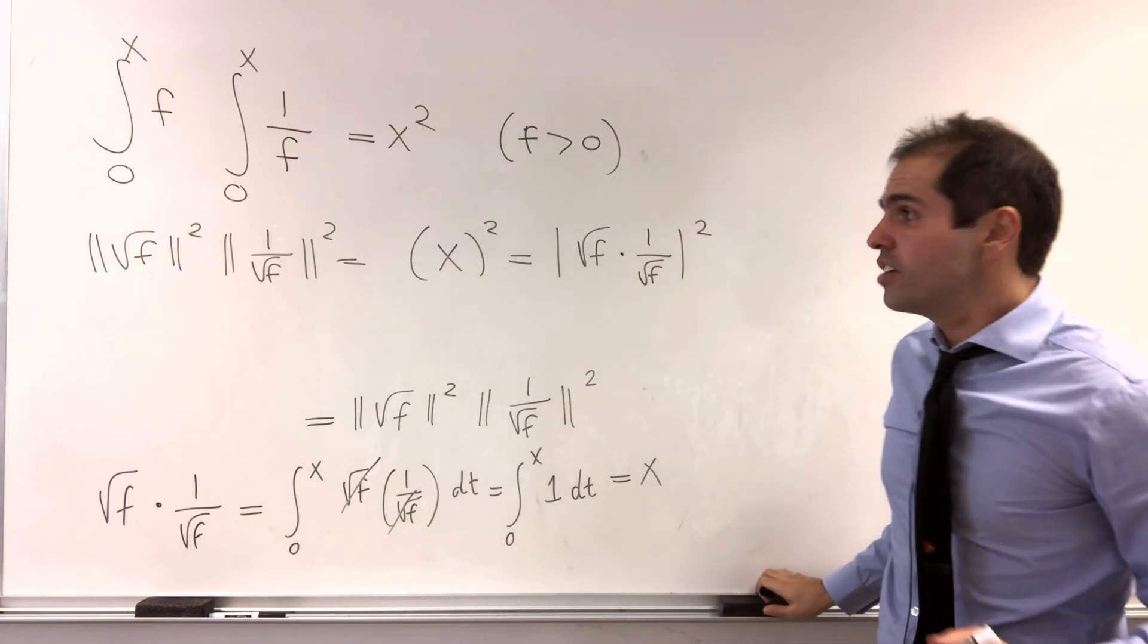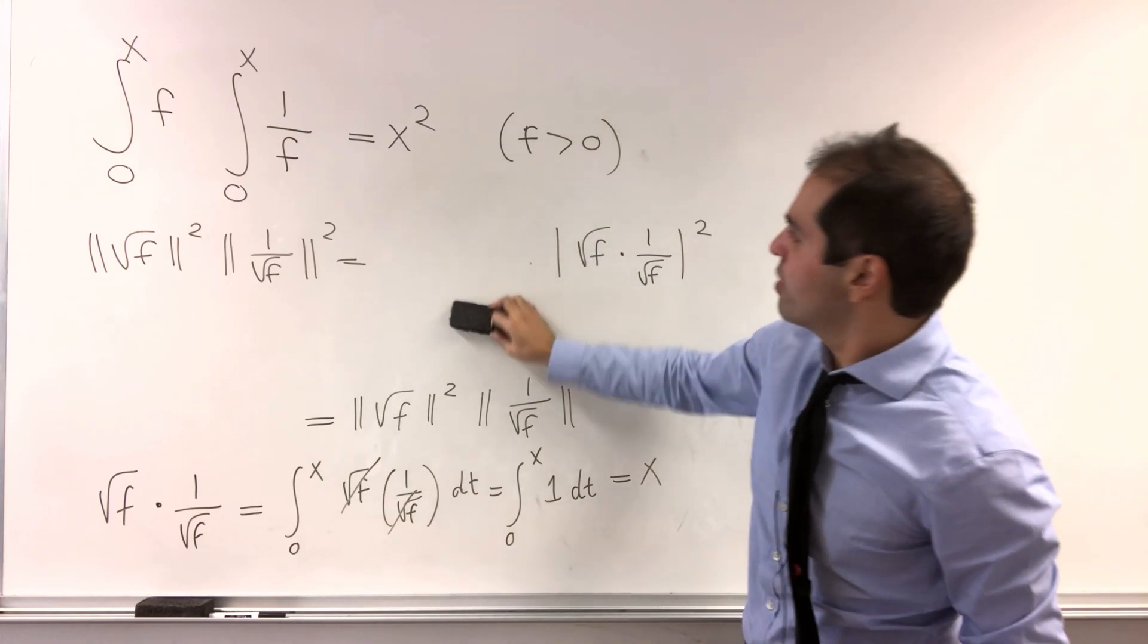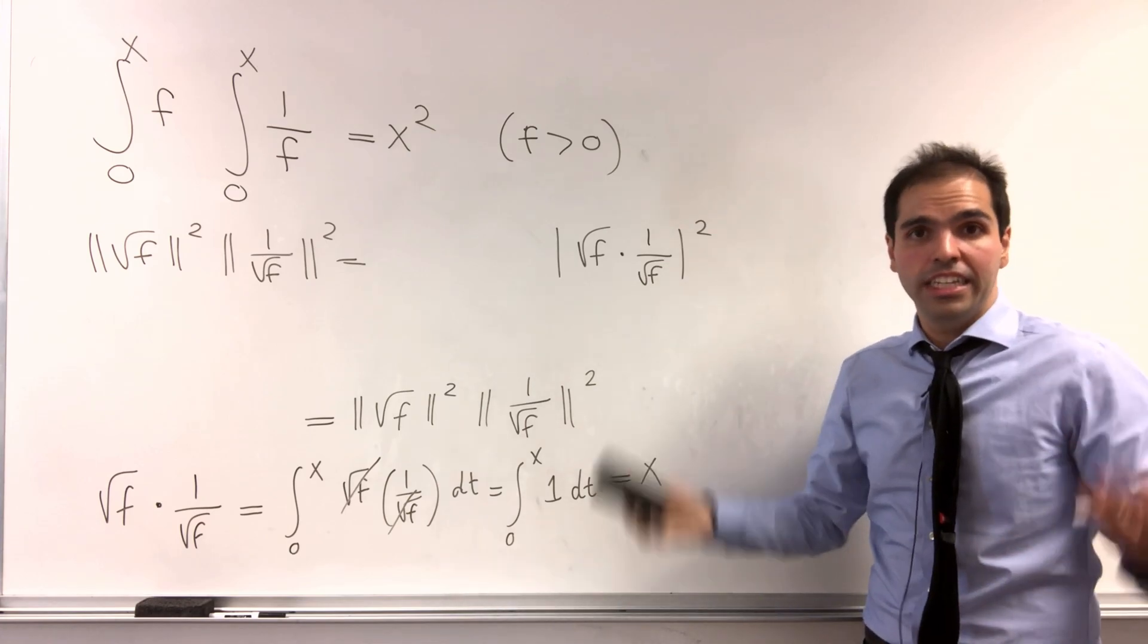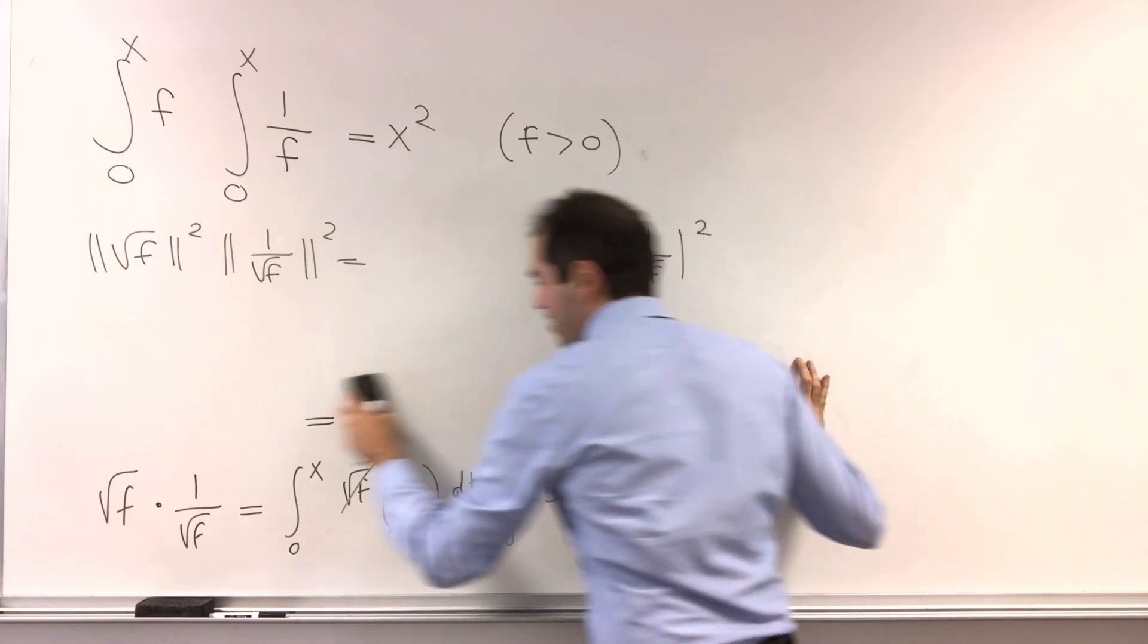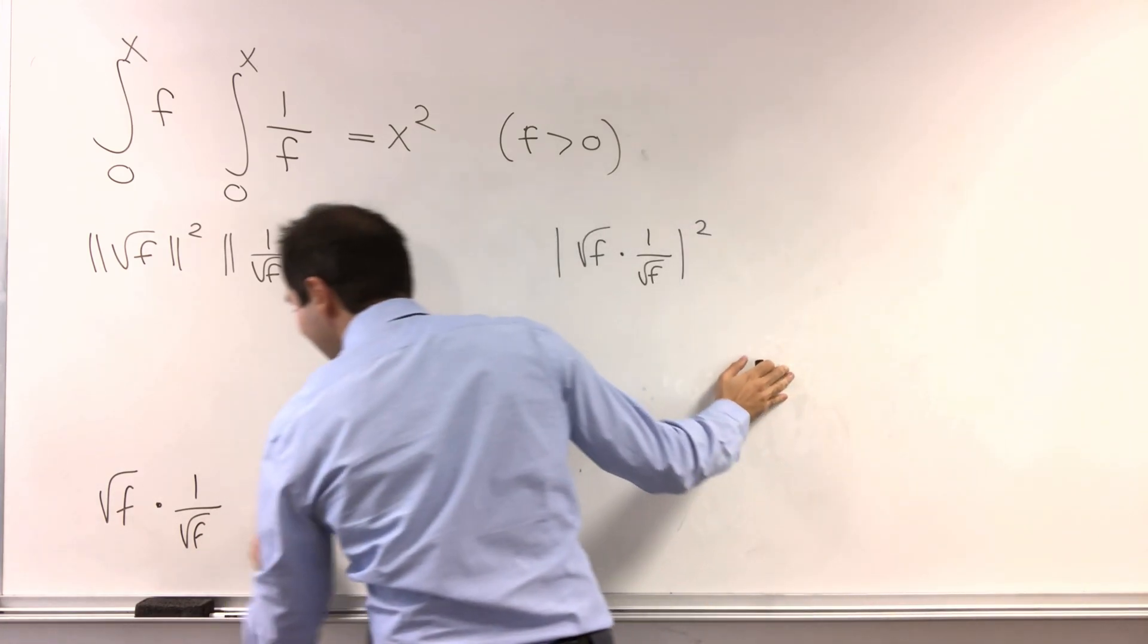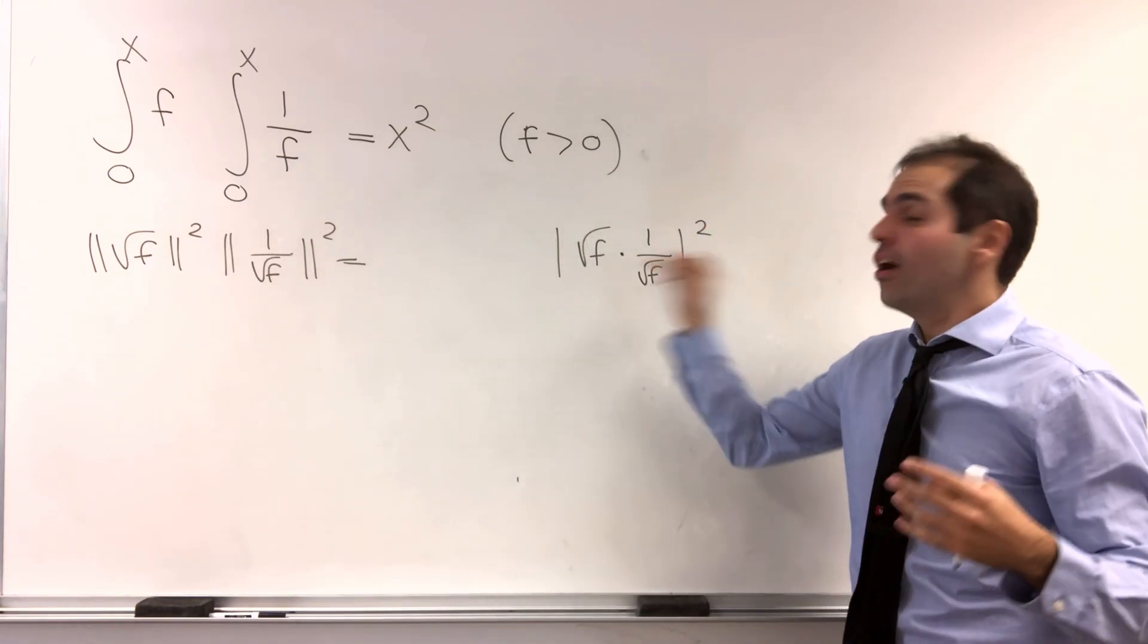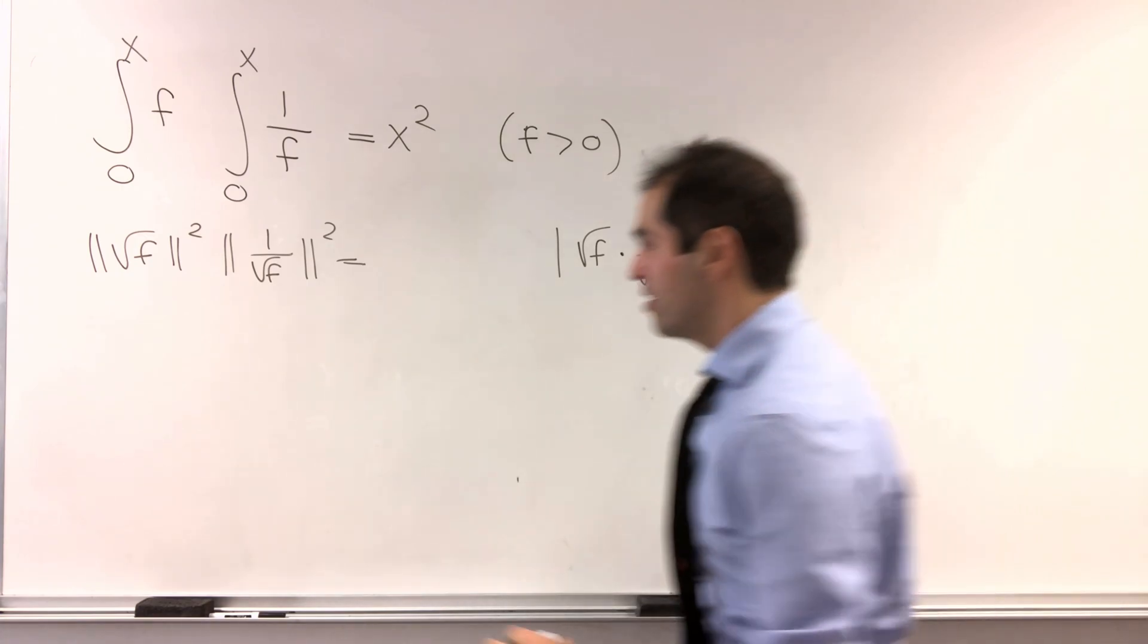So, indeed, if you ignore the middle term, what are we saying? We're saying we do have equality in Cauchy-Schwarz, and remember what conclusion we had. We have equality if and only if we have one is a multiple of the other one.